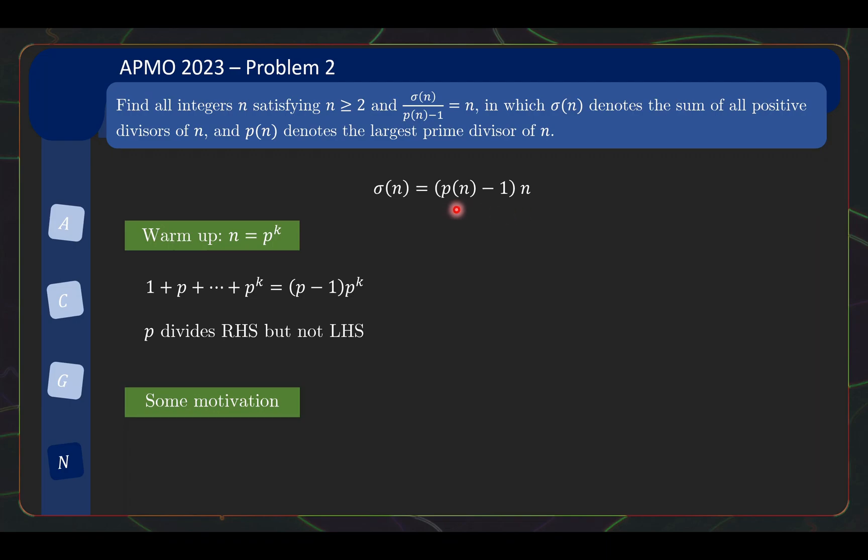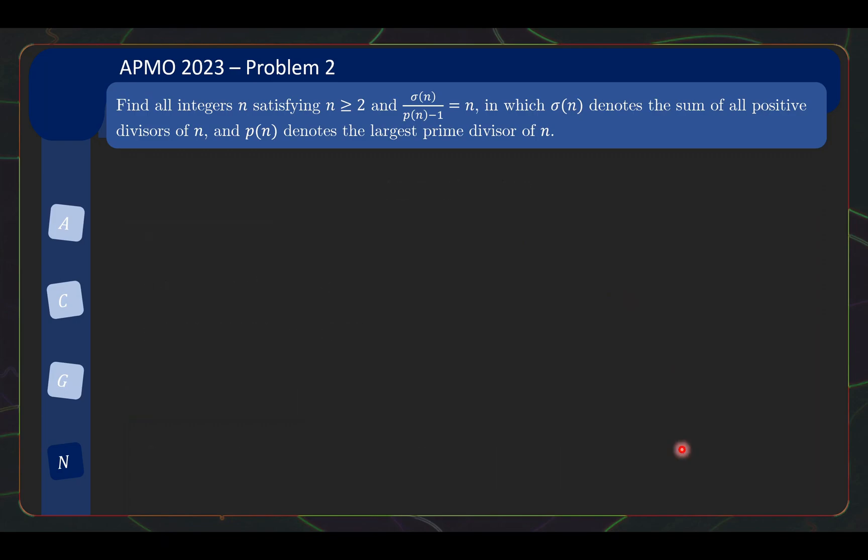Can I really get sigma n to be so many times larger than n? Yes, you can, but can I get it to be p(n) minus 1 that number of times of n? Remember, as your number gets bigger, your p(n) is going to get bigger and it's going to get bigger as well. So you're going to be chasing after a shifting goalpost. So that gives you some inspiration to consider, maybe I should find a bound on sigma n over n. If I can show that this is smaller than the largest prime factor minus 1, then I will have concluded that there's no solution. Actually, there are solutions, but they are going to hopefully limit your scope of search.